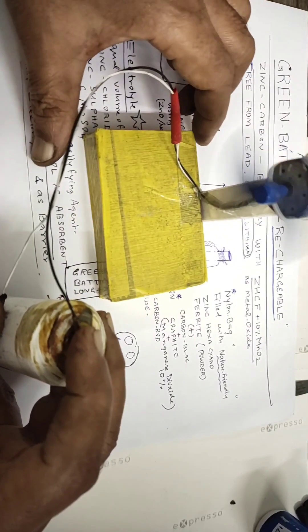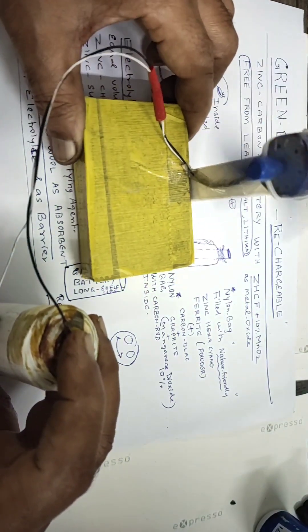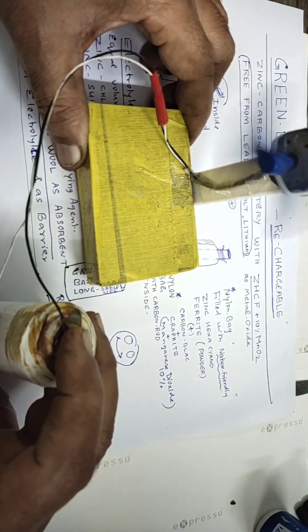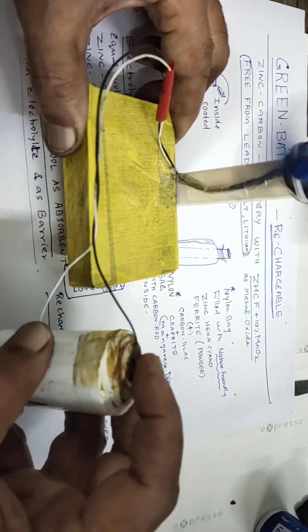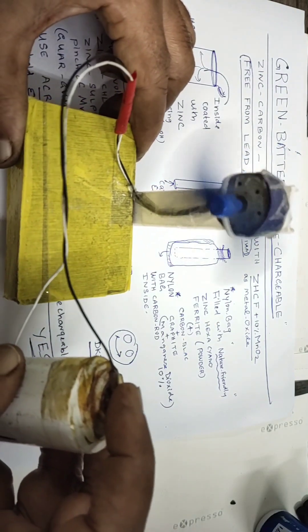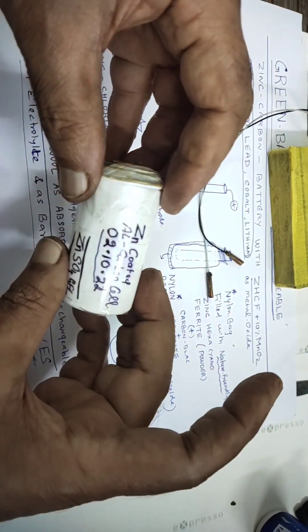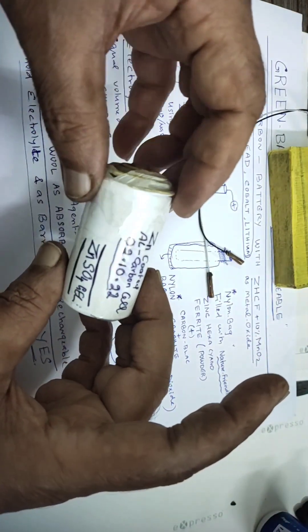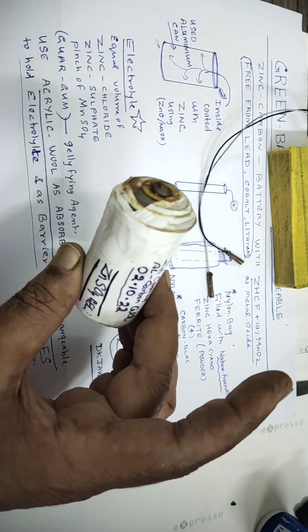Hi friends, today we can see how to prepare green rechargeable batteries using zinc-coated aluminum cans and carbon rods. This is the old battery which we prepared - zinc carbon battery with quick charging. This battery was prepared on 2/10/22. It's still fine - once you charge it, it's 2.1 volts and more than 300 milliamperes.